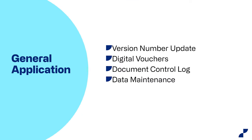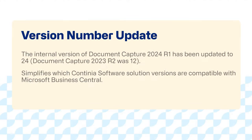First of all, I want to talk about general application. Version number update: the latest release 2024 has been updated to the internal version number 24. The previous release was 12, so we've doubled the number — you could say we got twice as good a solution. But it's actually to make it simpler for customers and partners to know which DomoCapture solution matches which Business Central version. With Business Central 24, we have released DomoCapture 24 — they match perfectly, so you know exactly what to install and use with your Business Central version.